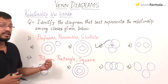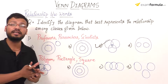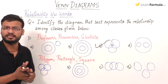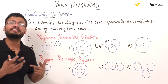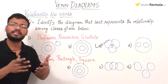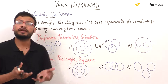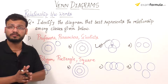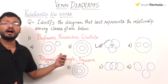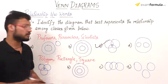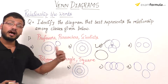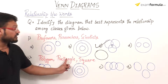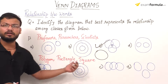Next question: the three words are polygon, rectangle, and square. I again have to find the best Venn diagram to represent these three words. First, let's consider the basic definitions. A polygon is any n-sided enclosed figure — it can be a triangle, rectangle, square, rhombus, quadrilateral, heptagon, hexagon, and so on. So both rectangle and square are part of the polygons, meaning the polygon will be the biggest circle, and rectangle and square will appear inside it.